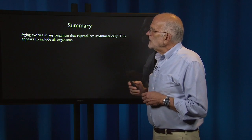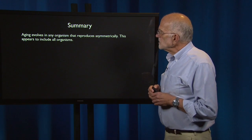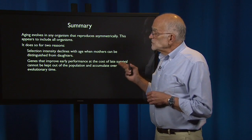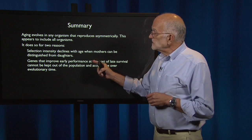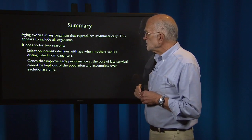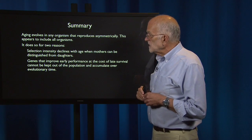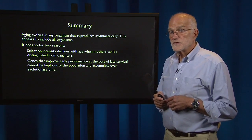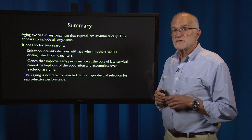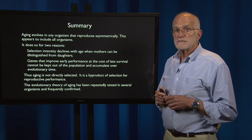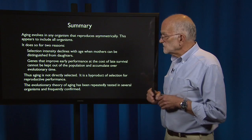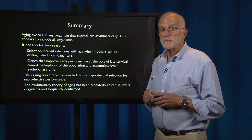To summarize: aging evolves in any organism that reproduces asymmetrically, and that appears to include all organisms. It does so for two reasons. First, selection intensity declines with age when mothers can be distinguished from daughters, and genes that improve early performance at the cost of late survival cannot be kept out of the population and accumulate over evolutionary time. Thus, aging is not directly selected — it is a byproduct of selection for reproductive performance. The evolutionary theory of aging has been repeatedly tested in several organisms and frequently confirmed. It appears to be quite solid.